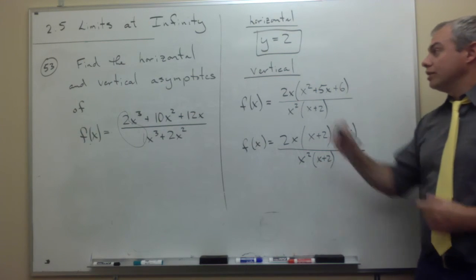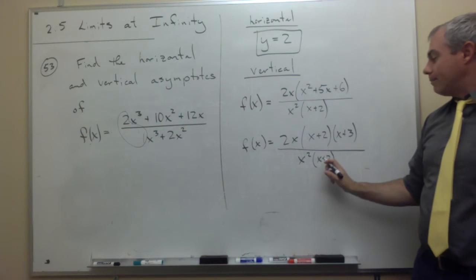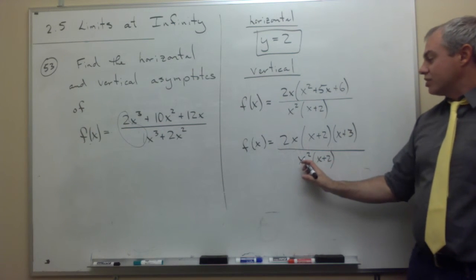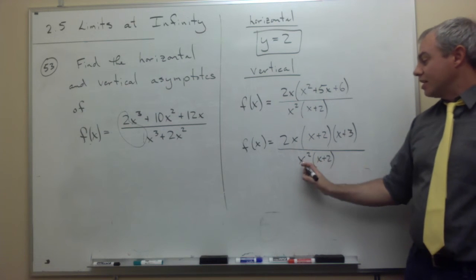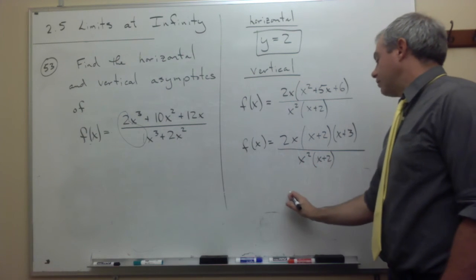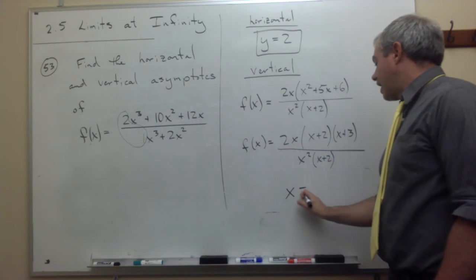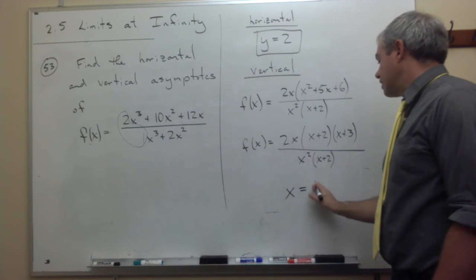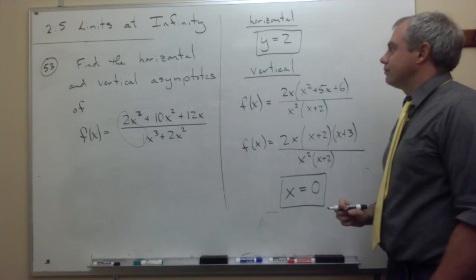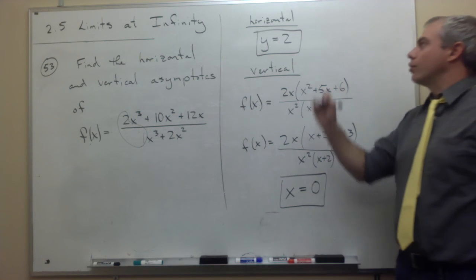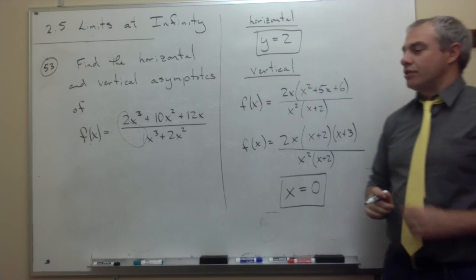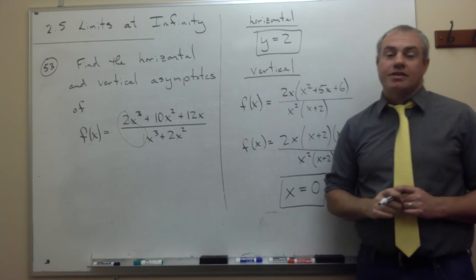So the only vertical asymptote that's going to show up here — it's not from the x plus 2, and it's not from one of these x's that cancels — but the other x on the bottom is going to give me a vertical asymptote at x equals 0. So I have a horizontal asymptote at y equals 2, and I have a vertical asymptote at x equals 0.